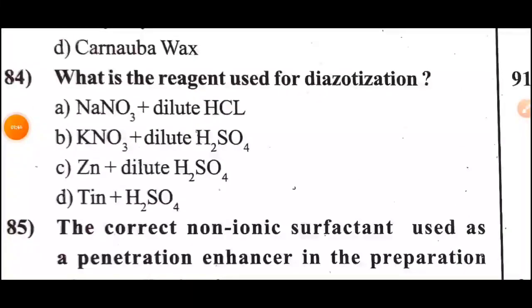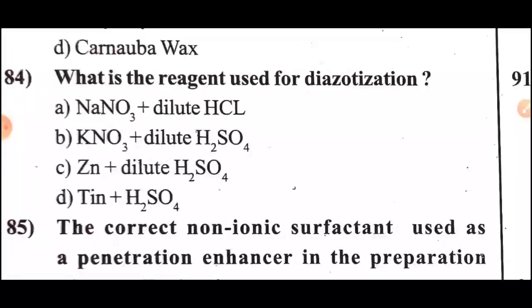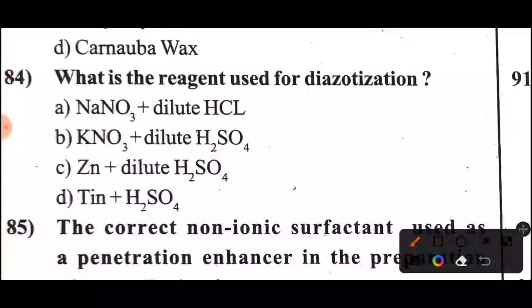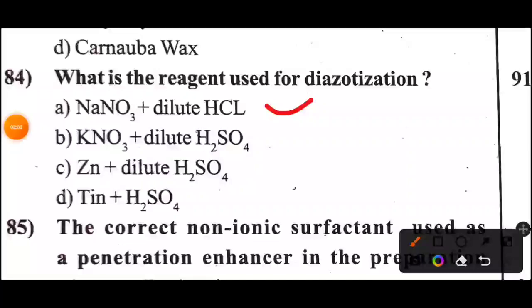Question 84: What is the reagent used for diazotization? Option A: NaNO2 plus dilute HCl.